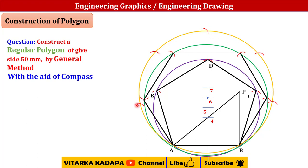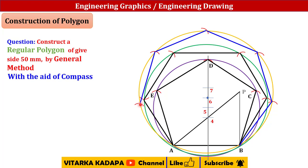Count the points: one, two, three, four, five, six, seven — we have seven points on the circle. Now join the lines from B to the next point, then point to point continuing around, to get the complete heptagon.